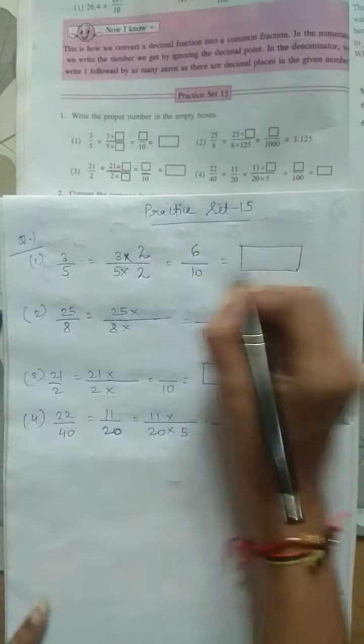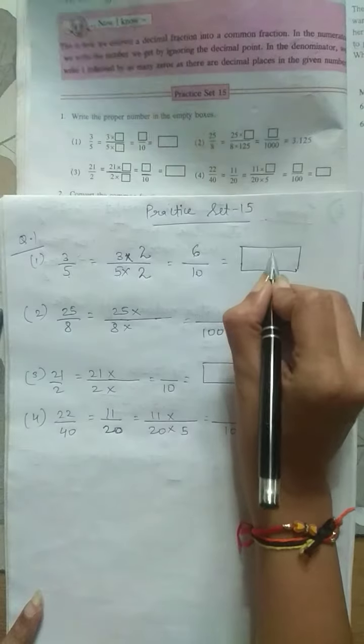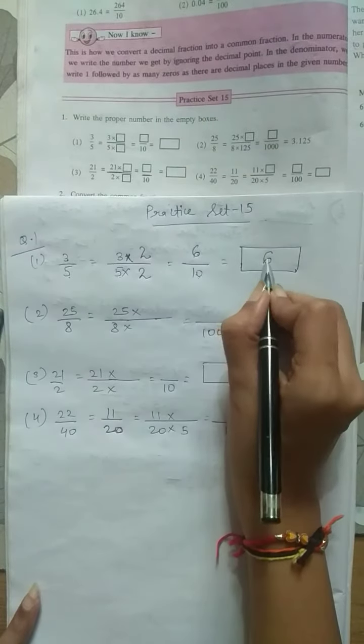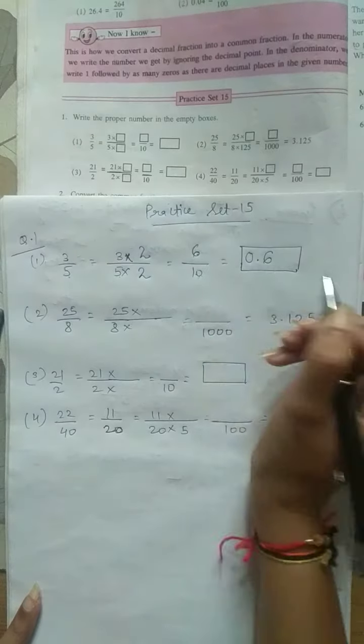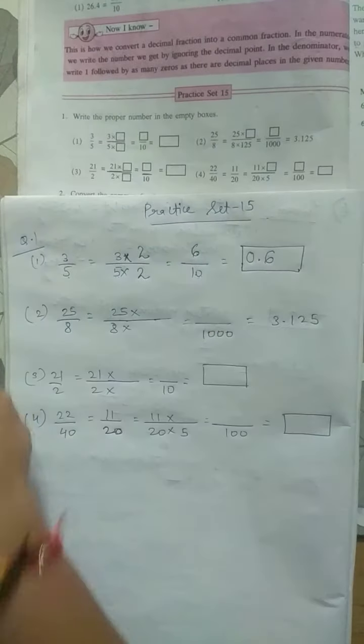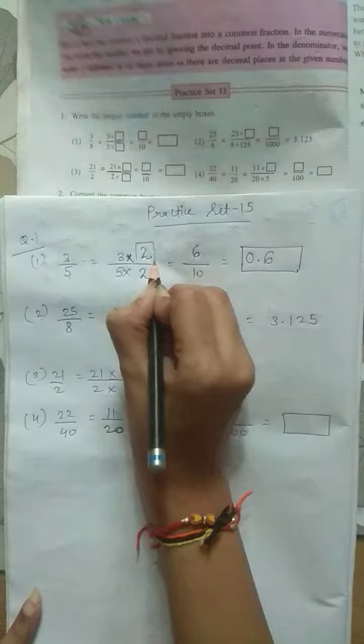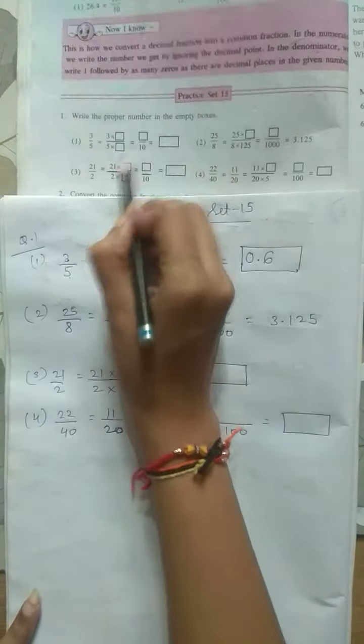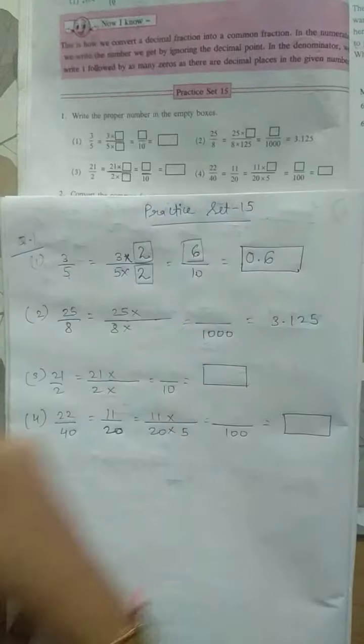So 6 upon 10. How will we write it? We will write the numerator. How many zeros are there? One zero. So we will count 1 and then put a decimal. This is how we write the decimal fraction. Put a box to the number wherever a box is being asked.